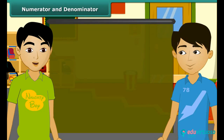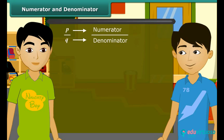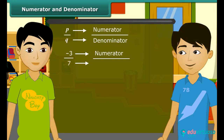Do you know what is numerator and what is denominator? In rational number P by Q, P is the numerator and Q is the denominator. For example, in minus 3 by 7, the numerator is minus 3 and the denominator is 7.